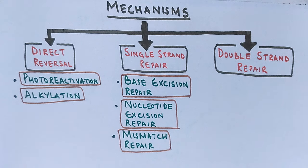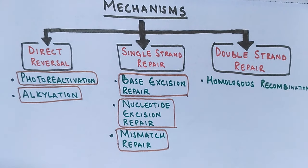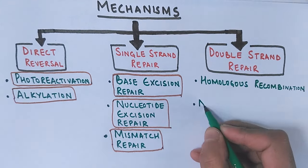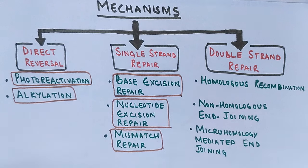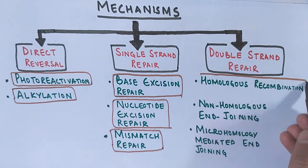The third type is the double strand repair mechanism, which repairs DNA that has breaks on both strands. These double-strand breaks are particularly lethal to the cell because they can lead to genomic rearrangements since both strands are involved in the damage. This mechanism also has three types: homologous recombination, non-homologous end joining, and microhomology-mediated end joining.